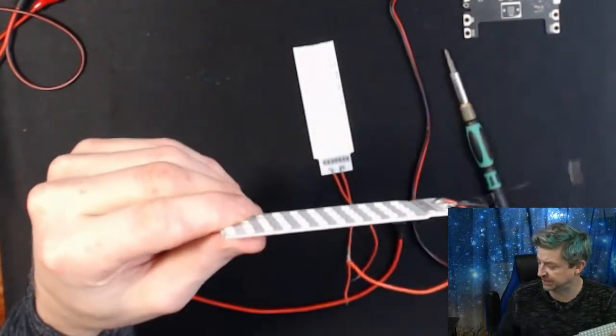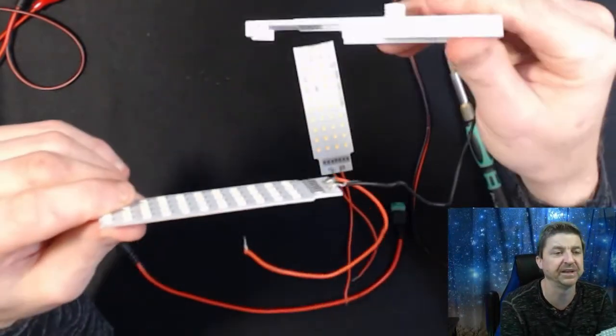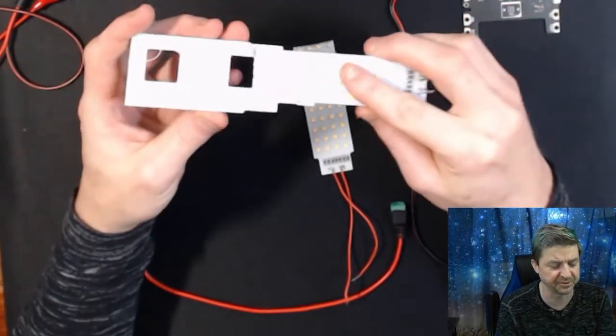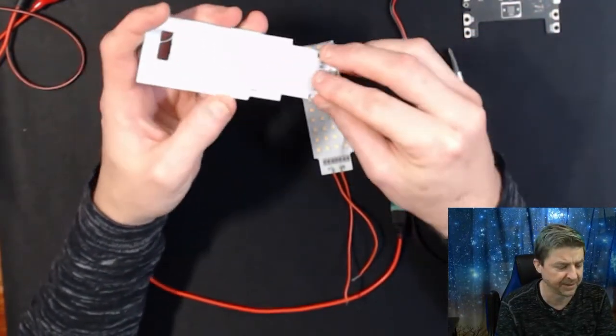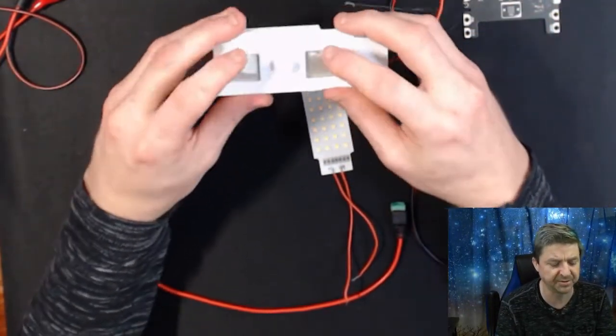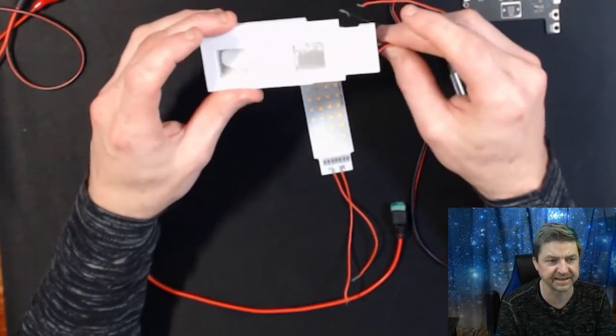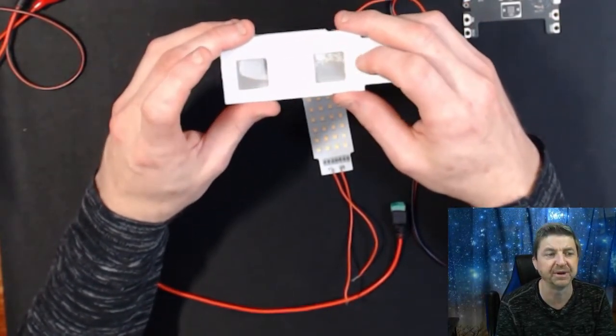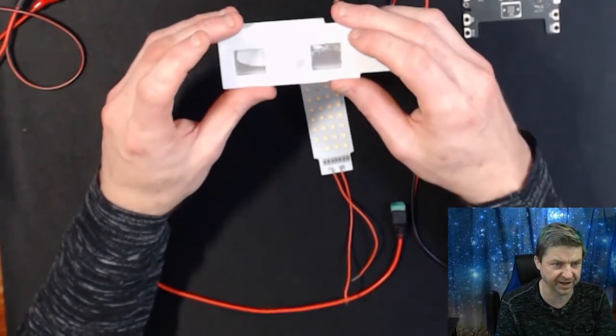We've 3D printed little holders and the LED light strips will just slide right in. We'll put them where they're nice and snug and tight and there's little holes on the top to help dissipate any heat but they do not get very hot at all.